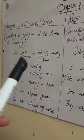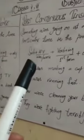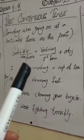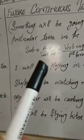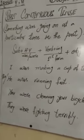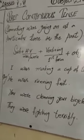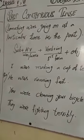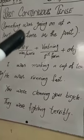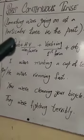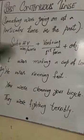Present continuous کا helping verb کیا تھا؟ is، am، are. Past continuous کا ہے: was اور were۔ اور future continuous کا ہے: will be. Past continuous tense is used to talk about something that was going on at a particular time in the past.